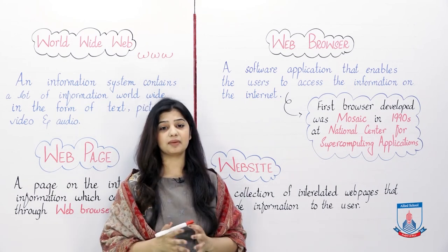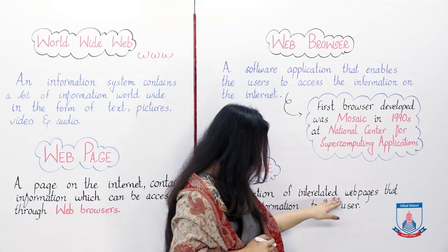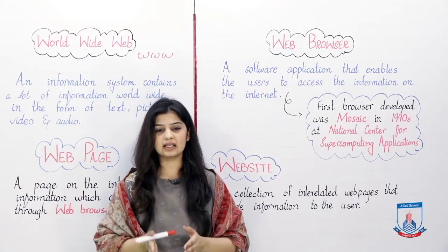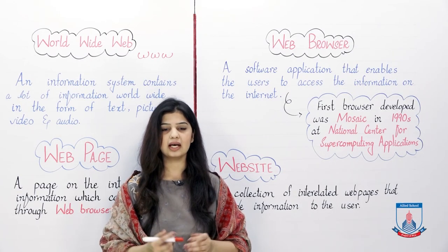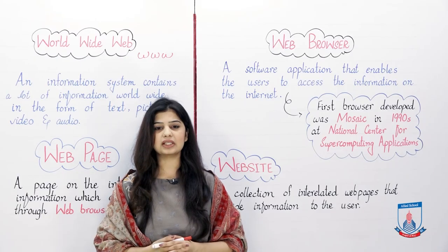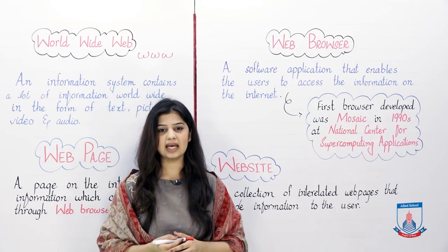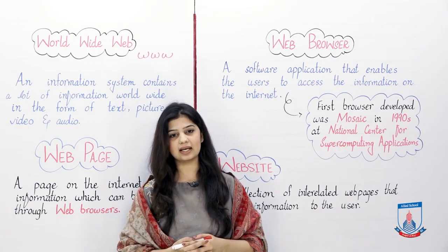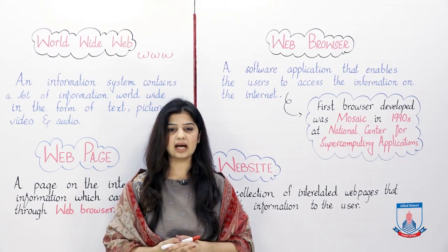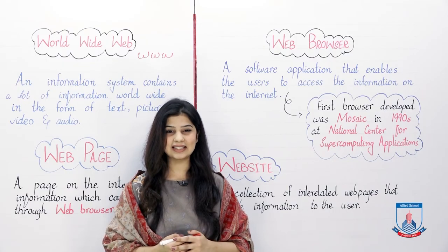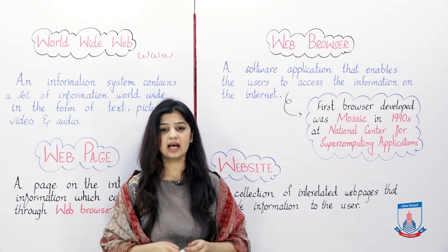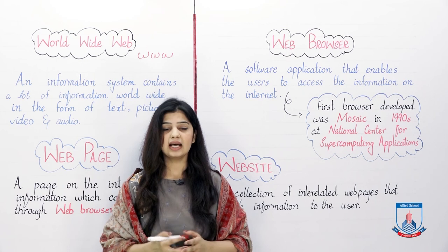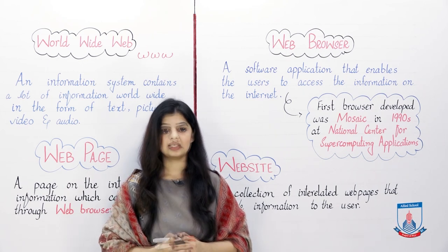Next is website. A website is a collection of interrelated web pages that provide information to the user. Those web pages are usually inter-related. For example, a company's website will have pages relevant to that company's different things. You can use different websites for different services — for example, Wikipedia is a website where you can search for information, and different pages on the topic will be inter-related.